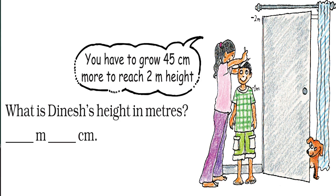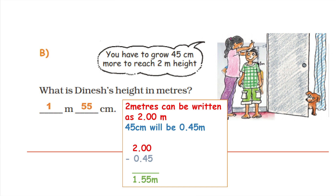The next question: Dinesh the little boy needs to grow 45 centimetres more to reach 2 metre height. What is his present height in metres? In order to find his present height, we need to subtract 45 centimetres from 2 metres. 2 metres can be written as 2.00 metres, and 45 centimetres can be written as 0.45 metres. And then you subtract the two. The answer will be 1.55 metres. Therefore, the present height of Dinesh is 1 metre 55 centimetres.